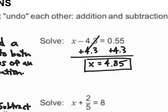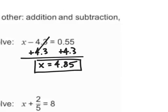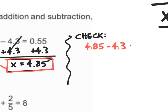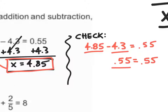There is a way to check to determine if we are correct. I'm going to take the value for x and plug it back in. So 4.85 minus 4.3 — we're going to see if we get 0.55 as a result. That does give me 0.55, which is equal to 0.55. Because this is equal to that, that's a true statement, therefore that is the right answer.